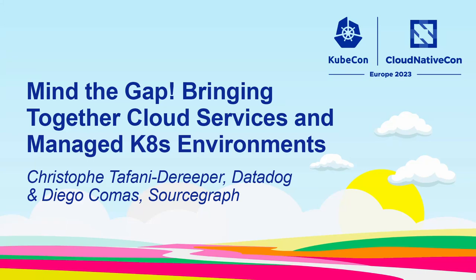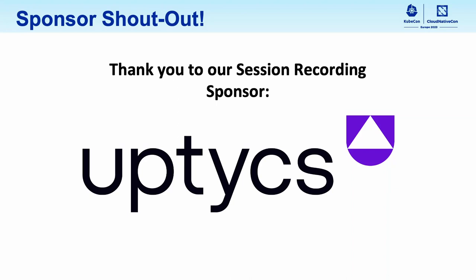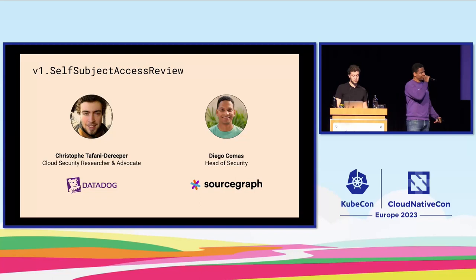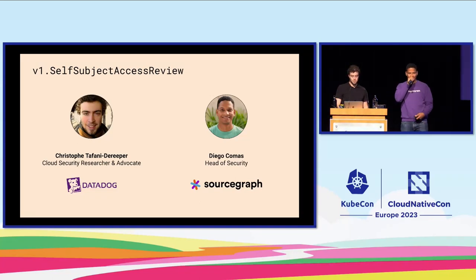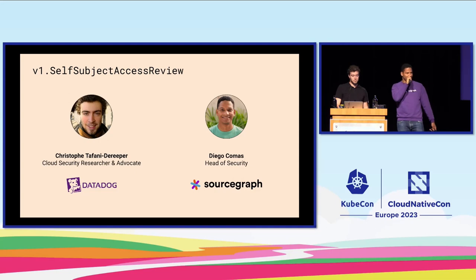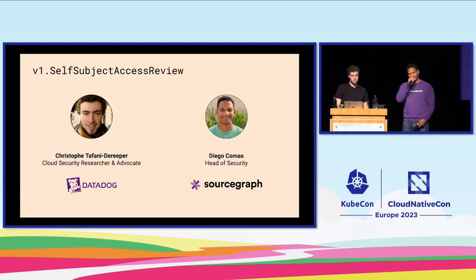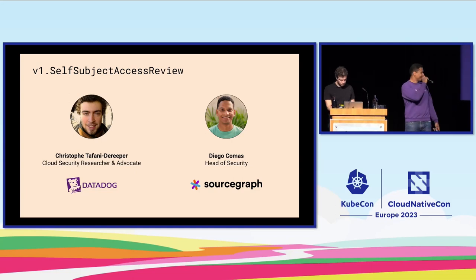Hello everyone. Welcome to our talk. My name is Diego Comas. I'm the head of security at Sourcegraph. I've been protecting cloud native environments and Kubernetes environments in many companies. I love all the security that can be enabled in cloud native projects, and I'd love to talk about all this here.